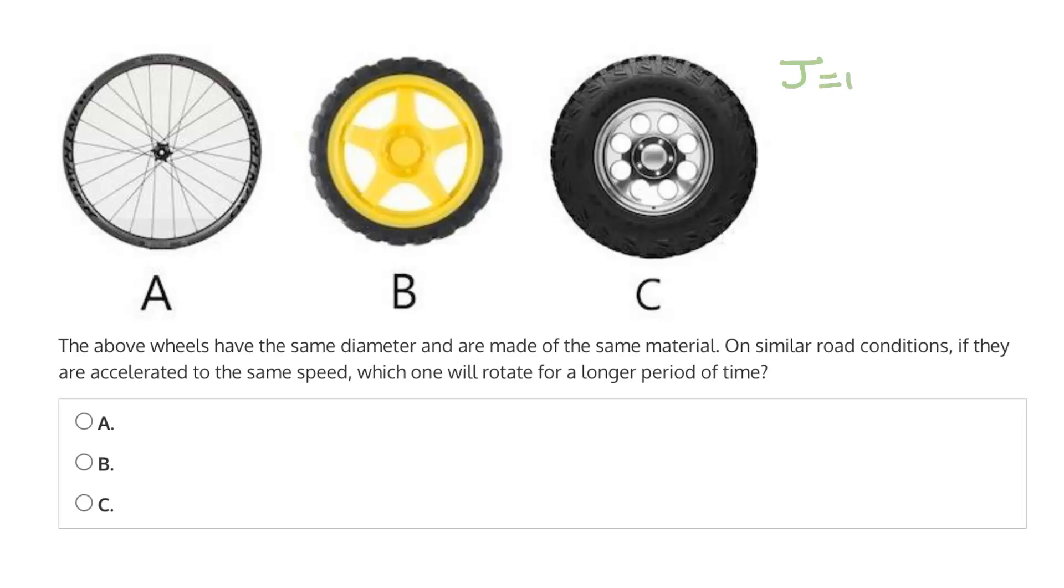It depends on the radius, in fact the square of the radius, and it depends on the mass. Now in terms of the radius, each of these wheels have the same diameter, which means they have the same radius, which means the square of the radius is the same.